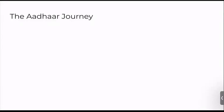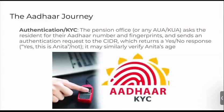Now that the Aadhaar number is available, let's look at how it enables authentication. The authentication or Know Your Customer process can be utilized by a bank, a pension office, or any such institution. For example, a pension office asks Anita for her Aadhaar number and fingerprints and sends an authentication request to the CIDR. This returns a yes or no response — confirming identity or verifying attributes like age. For this purpose, fingerprint biometrics are typically utilized.